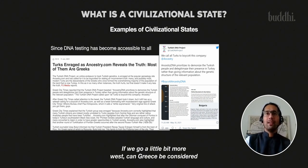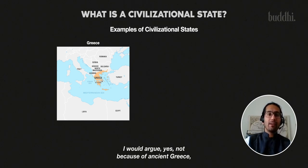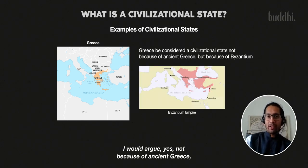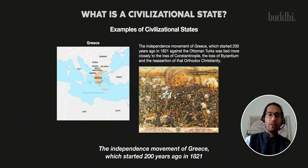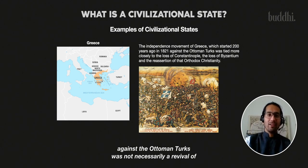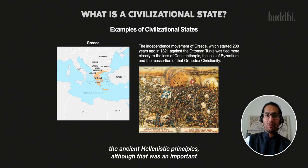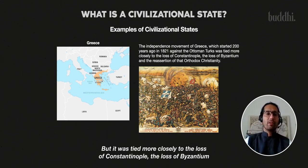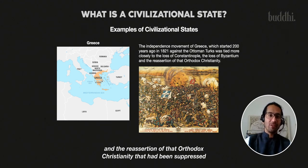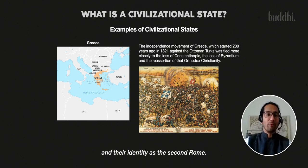Going a little further west, can Greece be considered a civilizational state? I would argue yes — not because of ancient Greece, but because of Byzantium. The independence movement of Greece, which started 200 years ago in 1821 against the Ottoman Turks, was not necessarily a revival of ancient Hellenistic principles, although that was an important part of crafting that identity. It was tied more closely to the loss of Constantinople, the loss of Byzantium, and the reassertion of Orthodox Christianity that had been suppressed, and their identity as the second Rome.